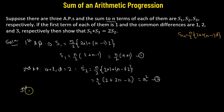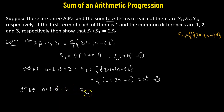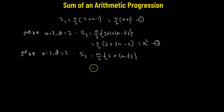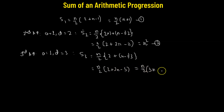For the third arithmetic progression, the first term is 1 and the common difference equals 3. So S3 — the sum to the nth term — is n over 2 multiplied by 2 times 1 plus n minus 1 times 3, giving n over 2 multiplied by 2 plus 3n minus 3, which equals n over 2 multiplied by 3n minus 1. This is equation 3.